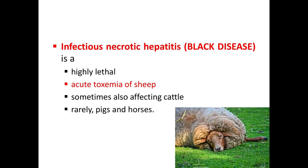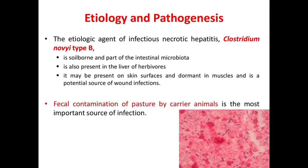The etiologic agent of infectious necrotic hepatitis is Clostridium novyi type B, a soil-borne bacteria and is a part of the intestinal microbiome, also present in the liver of herbivores and may be present on skin surfaces and dormant in muscles, and is a potential source of wound infections.